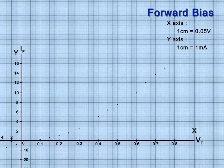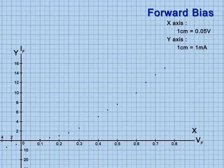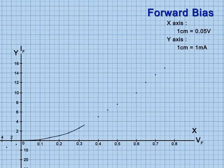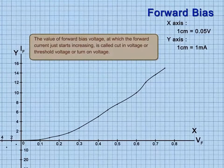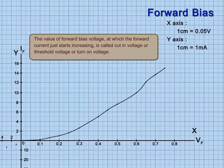Observe that in forward biasing, the forward current initially remains zero till the barrier potential of the junction is reached. Thereafter, the current starts increasing slowly in the beginning and then rapidly. The value of forward bias voltage at which the forward current just starts increasing is called cut-in voltage, or threshold voltage, or turn-on voltage.